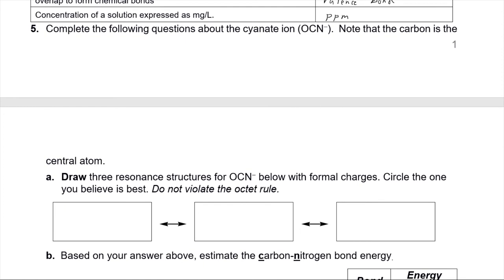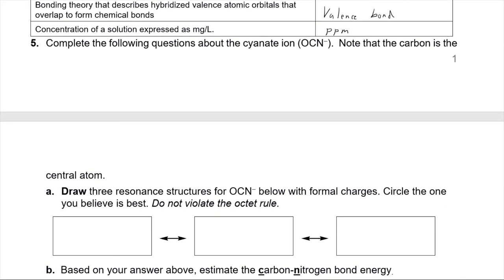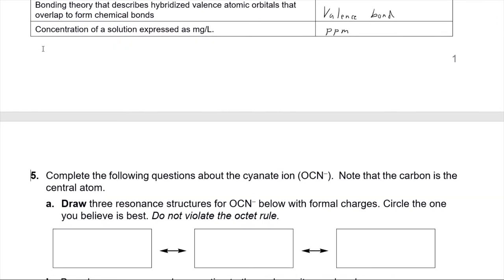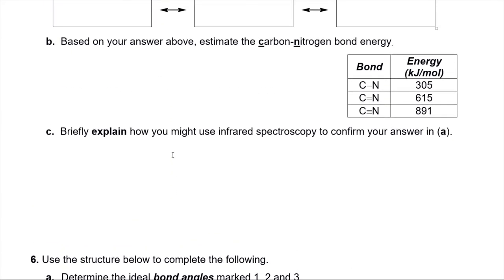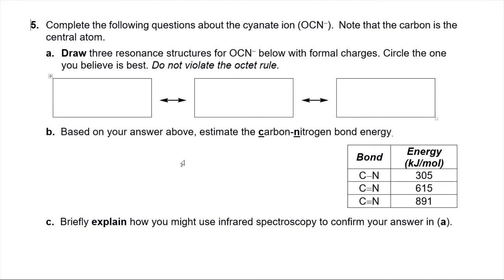I'm going to jump into the next one here. We're back on track. So we've got the cyanate ion, this OCN-, where C is the central atom. And it says note that the carbon's essential, so I gave you that one. Now, draw three resonant structures for OCN and give us the formal charges and circle the one you believe is best. And here's a little caveat. Don't violate the octet rule. Okay, well, I'll just go ahead and draw one. First thing I would do is say, please don't be afraid to count electrons.